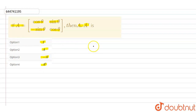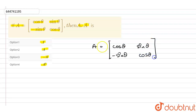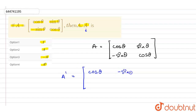So first of all, the matrix A is given as [[cosθ, sinθ], [-sinθ, cosθ]]. We will be finding out the value of A transpose, because we need A into A transpose. So A transpose is equal to [[cosθ, -sinθ], [sinθ, cosθ]].